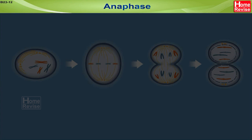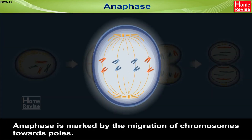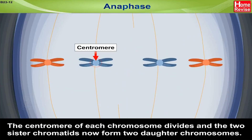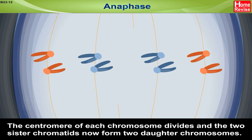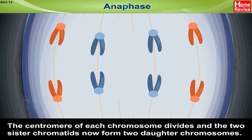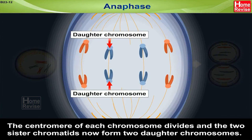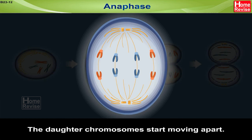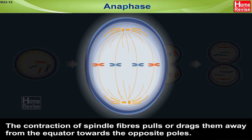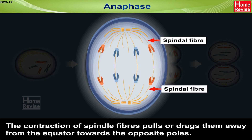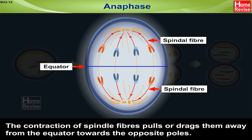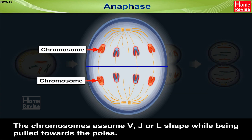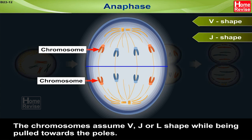3. Anaphase: Anaphase is marked by the migration of chromosomes towards the poles. The centromere of each chromosome divides and the two sister chromatids now form two daughter chromosomes. The daughter chromosomes start moving apart. The contraction of spindle fibers pulls or drags them away from the equator towards the opposite poles. The chromosomes assume V, J, or L shape while being pulled towards the poles.